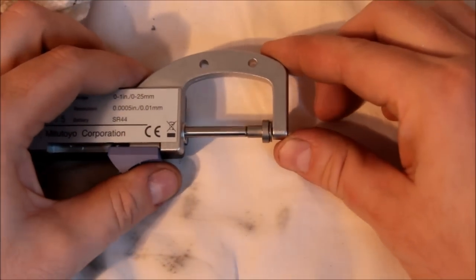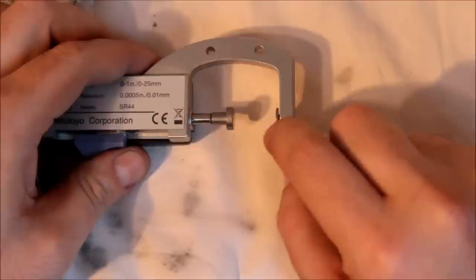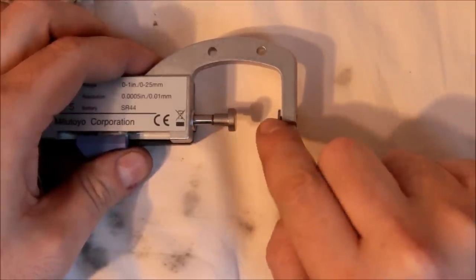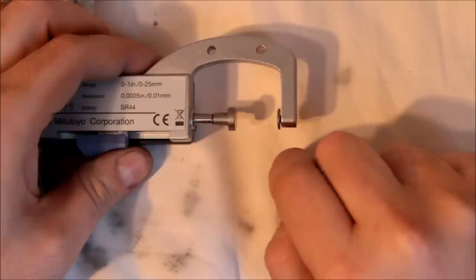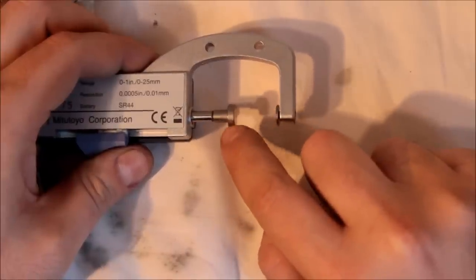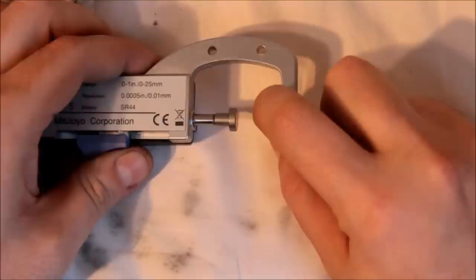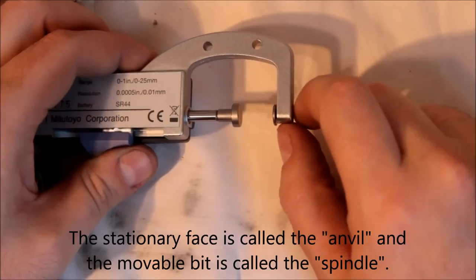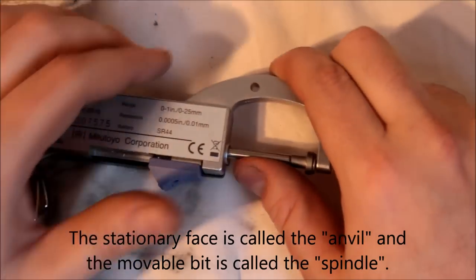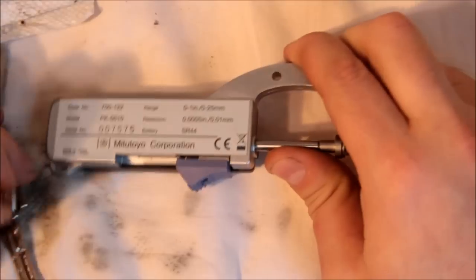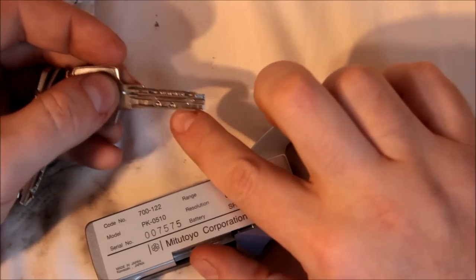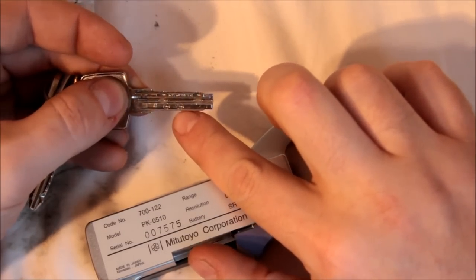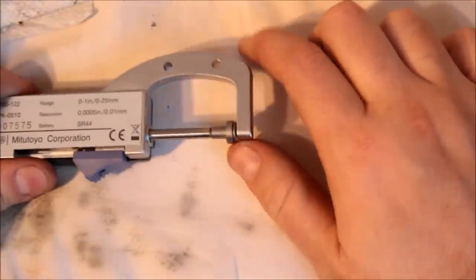They make micrometers that have pointy ends here. I think a thread micrometer is a good choice for that. Some of them you can change these faces out. This one, they're fixed. But the pointy ones would be good for measuring like the depths on a key, or even a regular key, because obviously this thick thing won't point, won't fit down in there.